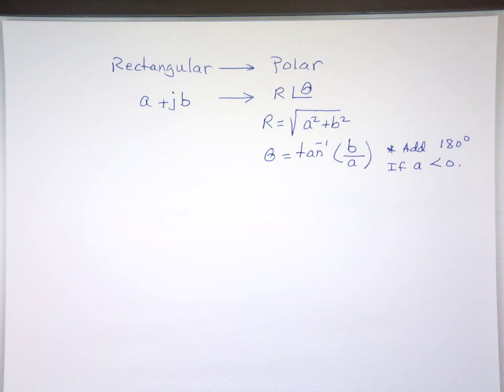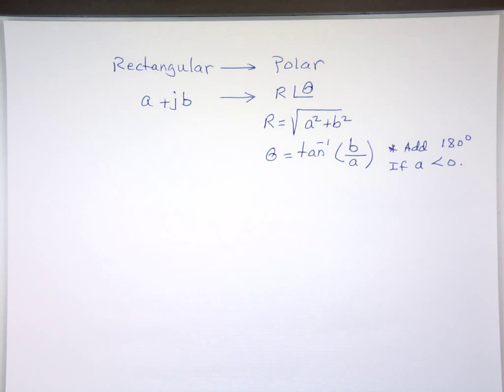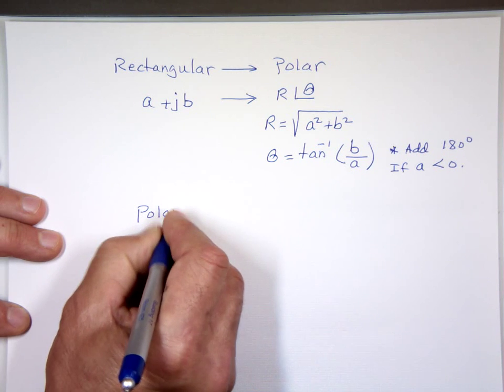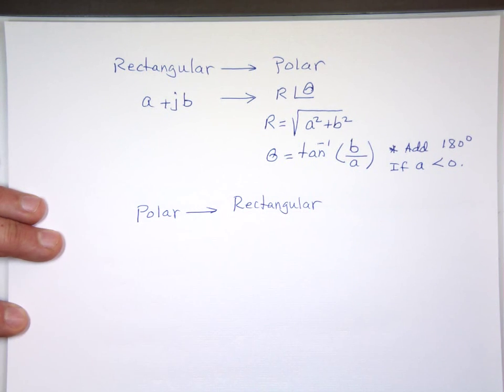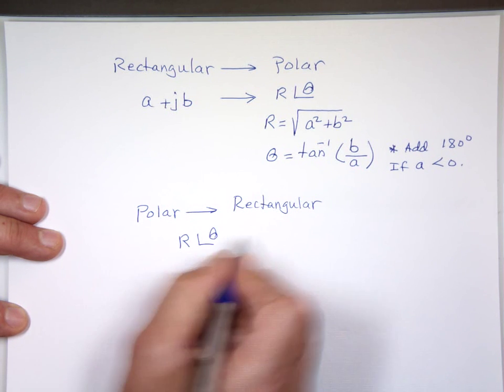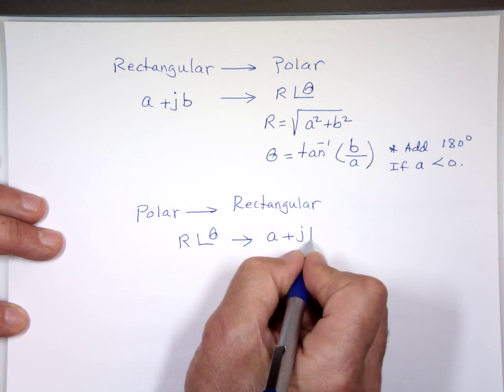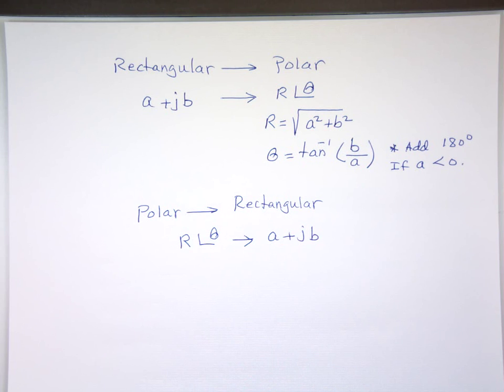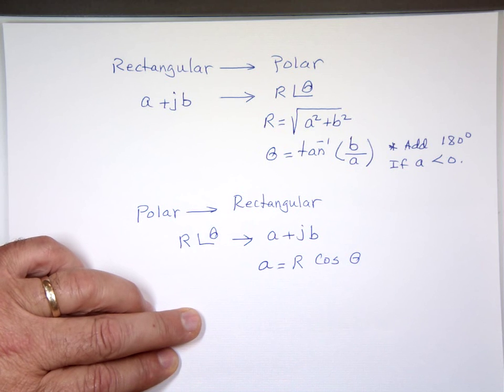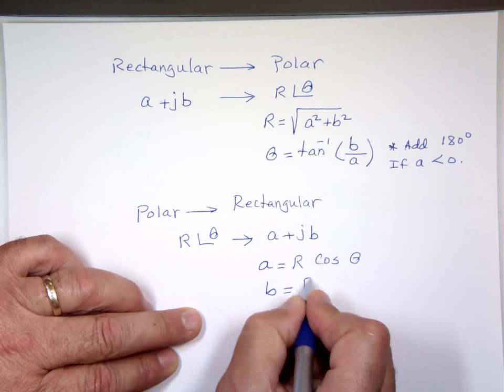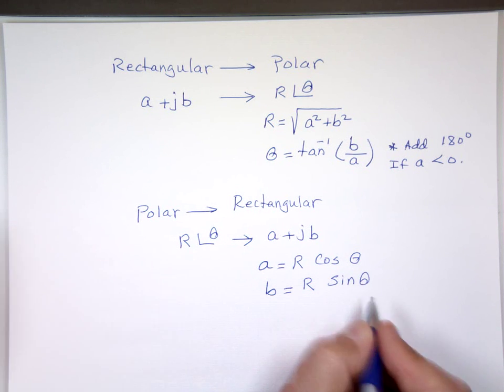Remember that, if you're in the second, third, we have to add 180? That's why. To go from polar to rectangular, the reverse. You know R and theta, and you want to change that to A plus JB. A is the X value, B is the Y value in vectors. The X value is always what? R cosine theta. And the imaginary B, which is the Y value, that's R sine theta. That's how we go back and forth between them.